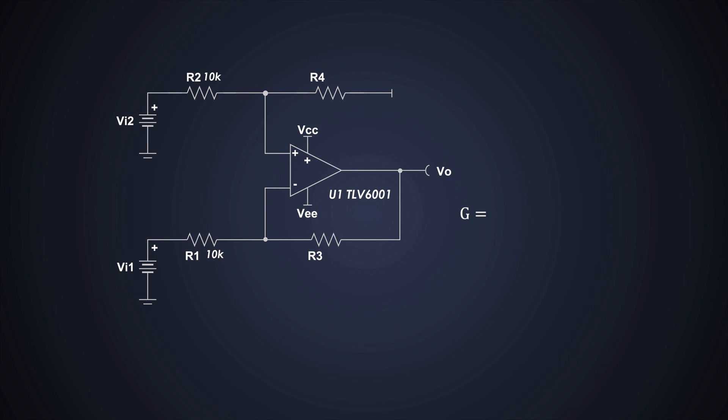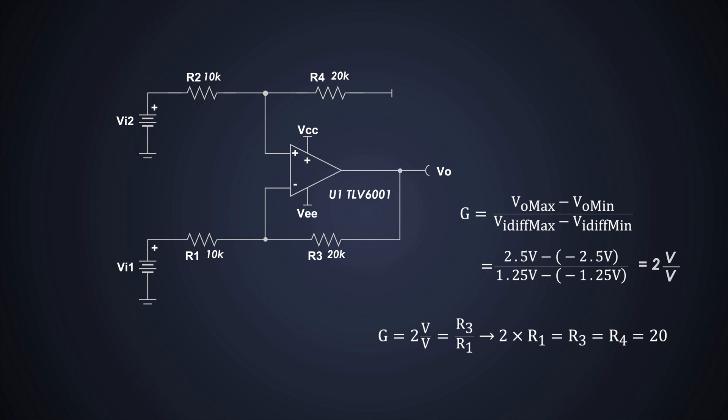Now from our input and output requirements, we can calculate the gain of this circuit, which can be calculated easily. And this will be 2V per volt. Well, from this gain, we can calculate the values of R3 and R4, which will be 20K.